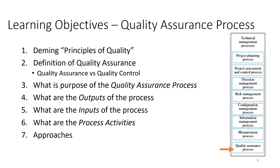The learning objectives for this video on the Quality Assurance Process are: first, a description of quality and the principles of quality as defined by Edward Deming; second, a definition of quality assurance; third, the difference between quality assurance and quality control; and then the purpose, outputs, inputs, and process activities directly from the Handbook, along with three approaches used for quality assurance.